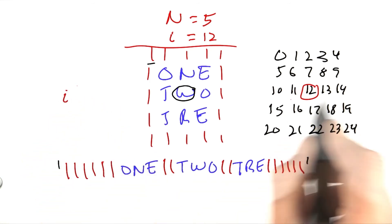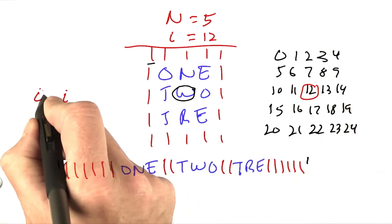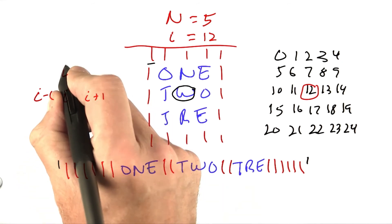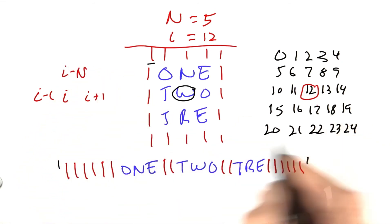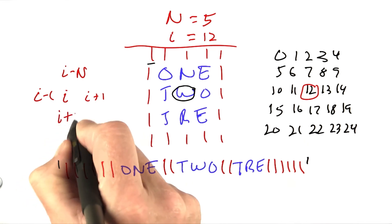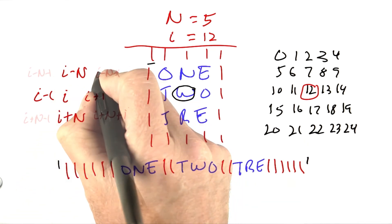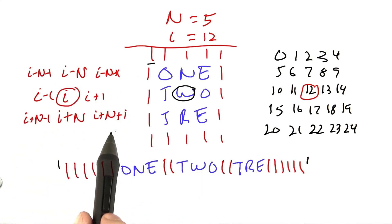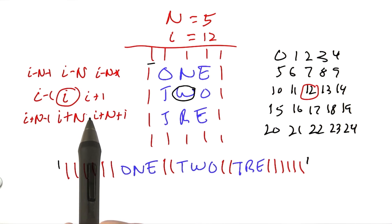11 and 13 are easy. That's i minus 1 and i plus 1. The 7 is just i minus N. The 17, i plus N. And then you can fill in the others. So you see, starting from i, it's easy to generate the 8 neighbors just by adding and subtracting N's and 1's. It's a little bit simpler doing it this way than it would with the 2-dimensional representation.